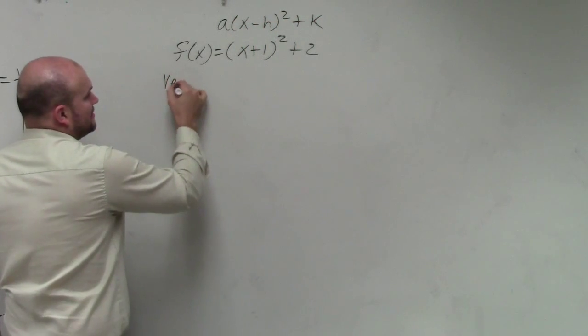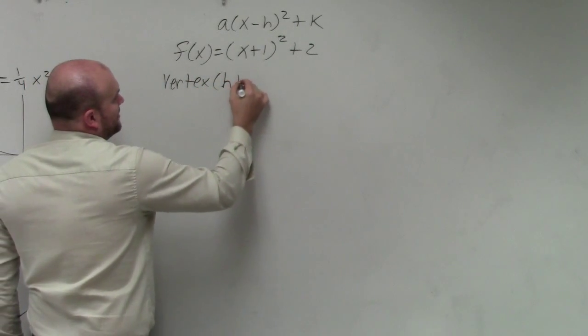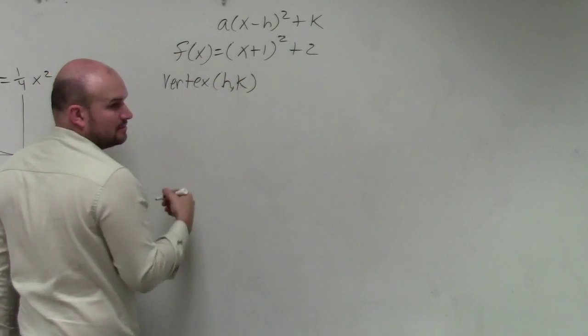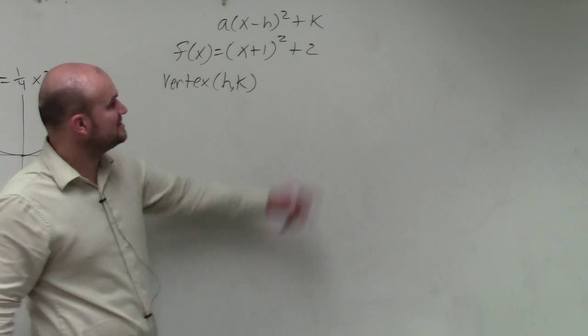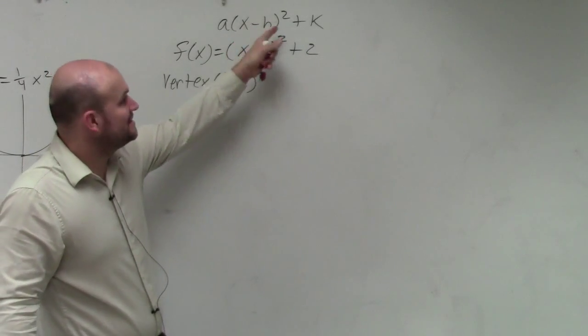Remember, the vertex is h comma k. So to identify the vertex, all I simply need to do is take the opposite. It's x opposite of h.